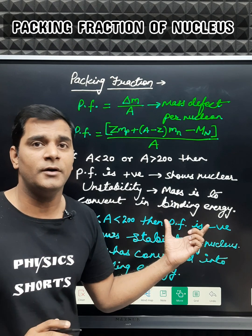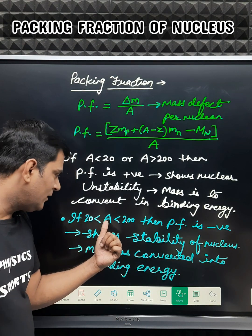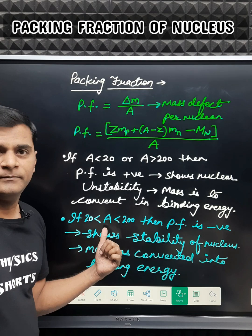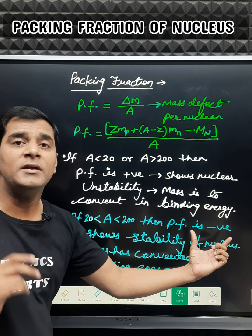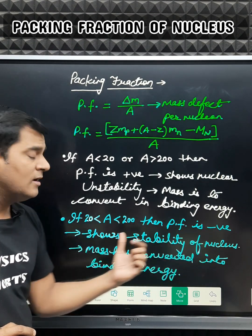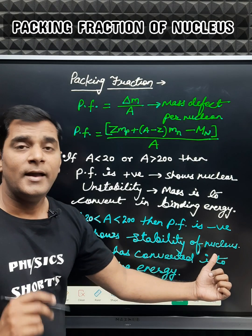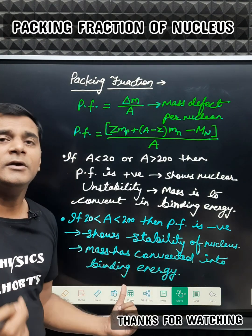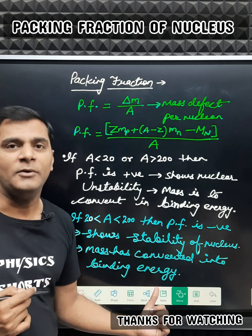Similarly, if A is greater than 20 and less than 200, then in this situation the packing fraction will be negative. This signifies that the nucleus is stable, and it means that the mass has already been converted into the binding energy to achieve this stability.